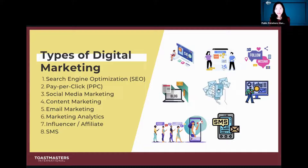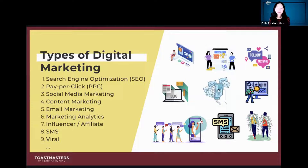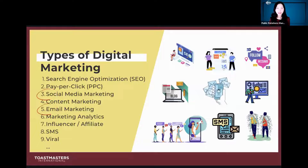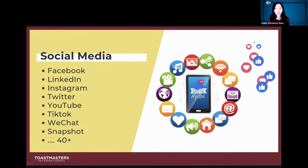Viral marketing is when something you create goes viral. One great example is the ice bucket campaign, which raised $115 million from just that one campaign. So within all these types of digital marketing channels there are many to explore. Today I want to focus more on social media and email marketing, because those are what I use most for District 30.